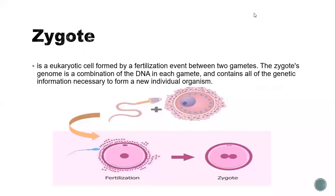The male gamete unites with the female gamete. Both these gametes are haploid, having half the number of chromosomes, so the resulting zygote is a diploid organism that has a complete set of chromosomes, as in the parent cell.